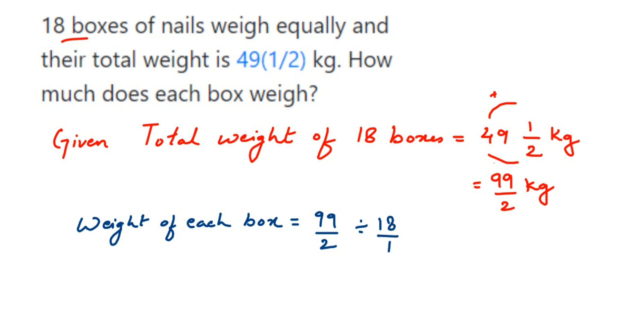Now you might have learned how to divide two fractions. When you're dividing two fractions, the first fraction, the first number, will remain the same - that is 99/2 will remain the same. The division sign will become multiplication. I'm going to write the multiplication sign. And the second fraction, that is 18/1, or the second number, it will become reciprocal. So reciprocal of 18/1 will be 1/18. Reciprocal means you have to just interchange the numerator and denominator.